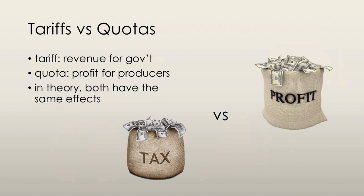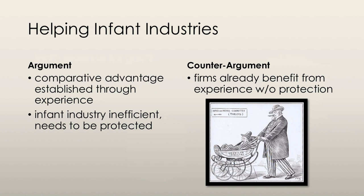Using either a tariff or a quota would result in the same increase in price and decrease in quantity. Both also harm domestic consumers and benefit domestic producers. Using trade barriers results in an inefficient allocation of resources for society as a whole.